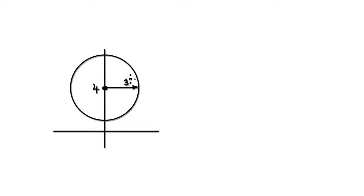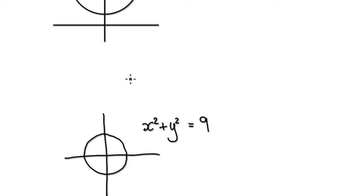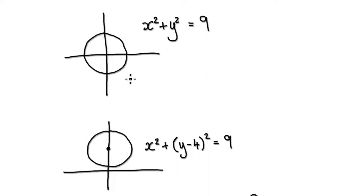To do this, start out with a circle of radius 3 and then move it up by 4. That will give us this thing here.